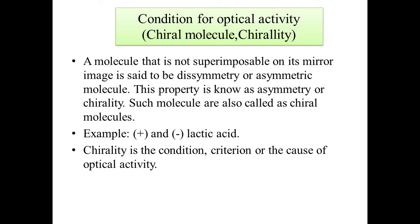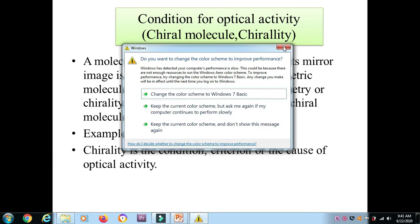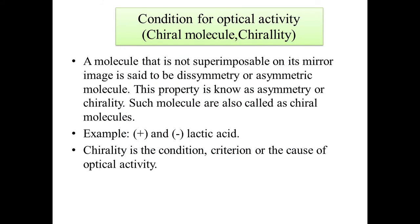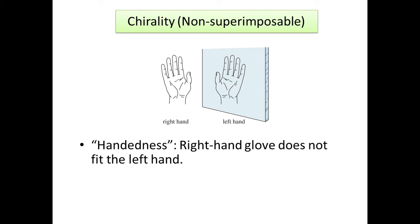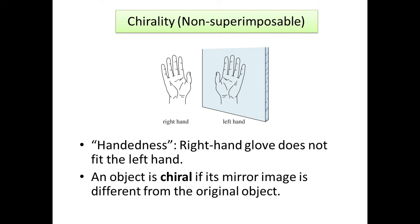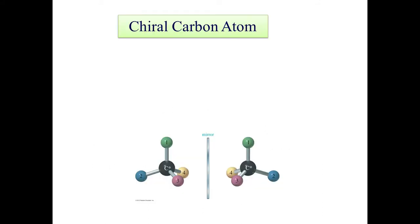The condition for optical activity is that the molecule must be non-superimposable on its mirror image — that is, the molecule has dissymmetry or asymmetry. This property is known as chirality, and such molecules are called chiral molecules. For example, (+) and (−) lactic acid are chiral. Chirality is the criterion for optical activity — like how a right hand and left hand are non-superimposable mirror images.